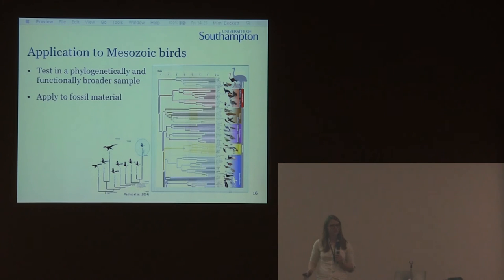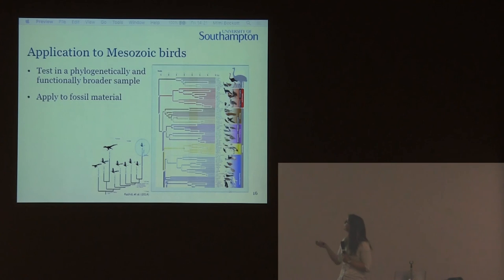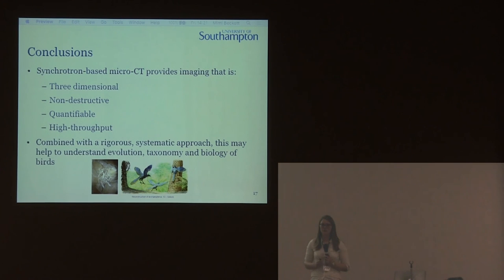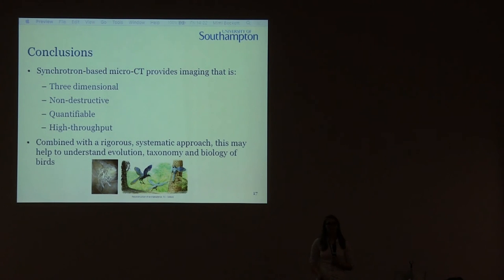Hopefully expanding the body size range right up to things like ostrich and even recently extinct elephant birds to get a really broad range, but also down into smaller and faster-growing altricial birds. Once that's been refined, I hope to apply this to fossil material and use that to really improve our understanding of growth in Mesozoic birds. To conclude, using a synchrotron-based micro-CT approach gives me a way of imaging avian bone in three dimensions, non-destructively. It's truly quantifiable and objective, the synchrotron source allows a high-throughput approach, and all of these things mean we can have a rigorous and systematic approach using growth series in modern birds for validation — helping us to understand the evolutionary, taxonomy, and biology of birds, both Mesozoic and modern.